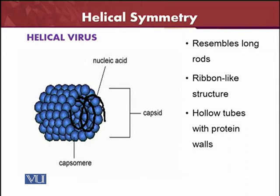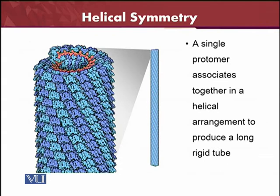Here we have an example of the helical structure of the capsid made up of capsomeres. The helical symmetry — its 3D structure — is given on these slides. A single protomer associates together in a helical arrangement to produce a long rigid tube, which is again and again wound along with the genetic materials together.